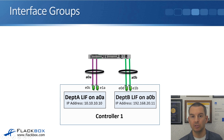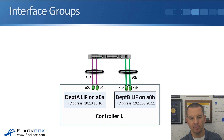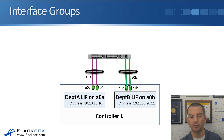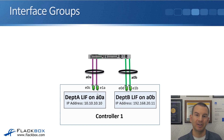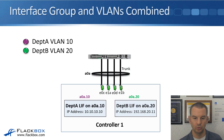But maybe there isn't enough bandwidth for department A and department B to burst. Using one-gigabit ethernet ports, each department has two gigabits available on their dedicated interface group. If either department sometimes wants to burst above that, they're physically limited to a maximum of two gigabits. Let's look at how we can use VLAN interfaces to allow them to occasionally burst above that two-gigabit limit.